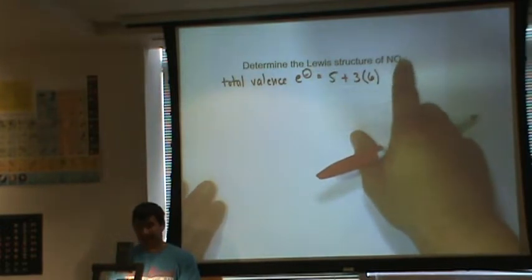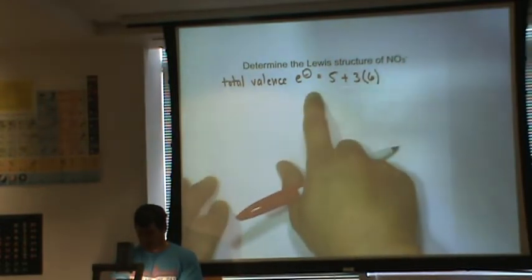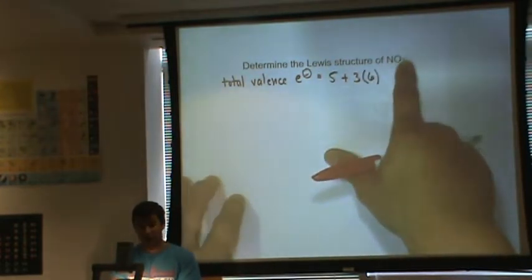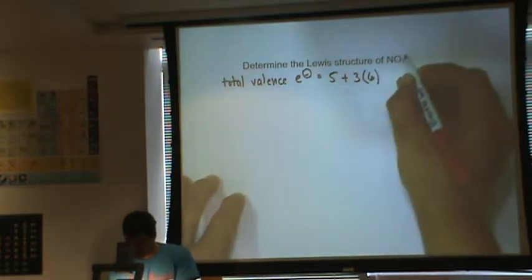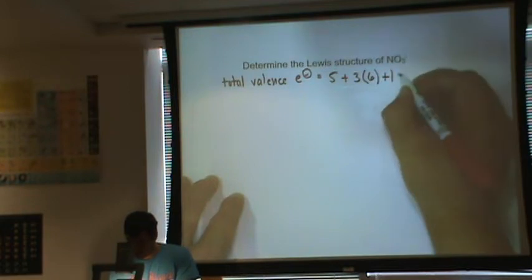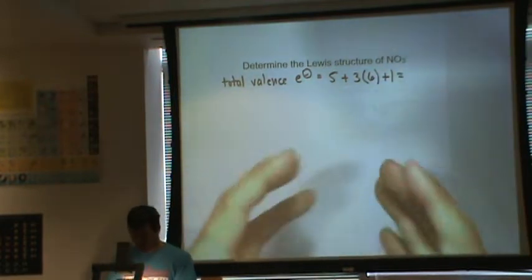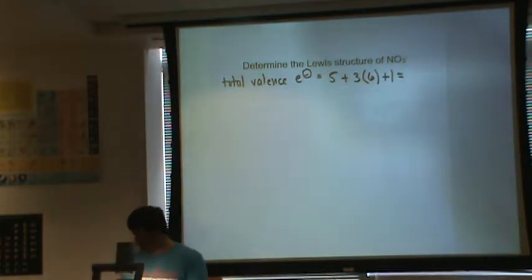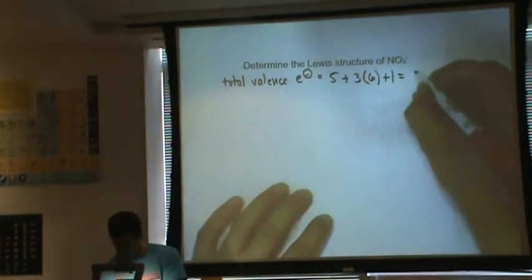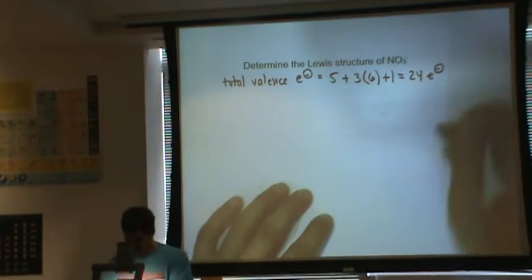But this time, instead of subtracting from the total electrons, I'm going to add because this is negatively charged. This has the overall charge of minus one, so I'm going to add one more electron. So the total number of electrons I can play with is going to be five plus 18 plus one, which is equal to 24. We have 24 electrons.